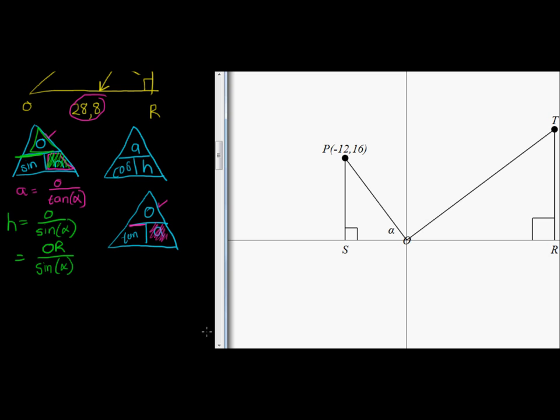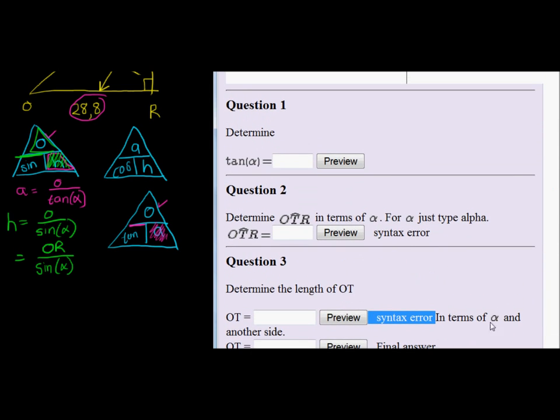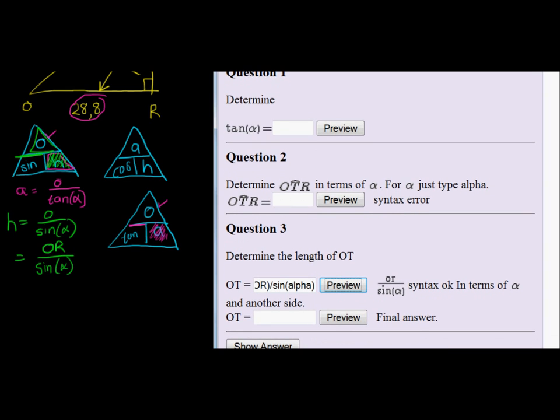Here we go. So let's type that in as my first answer. They said in terms of alpha and another side. So the other side is OR. And just to show that it's one side, I'm putting it in brackets, divided by sine and in brackets alpha. Let's preview. They say syntax okay, that means I at least typed in the correct symbols.